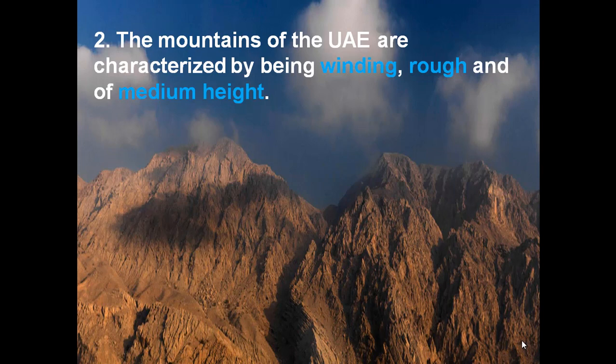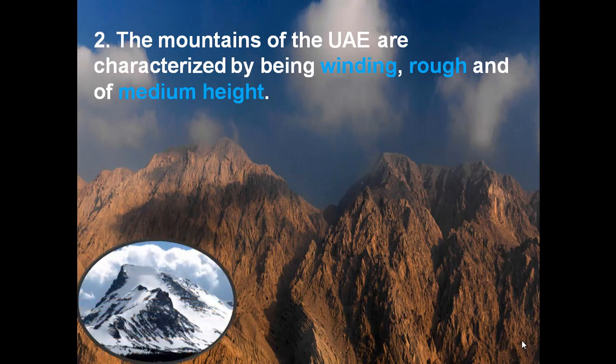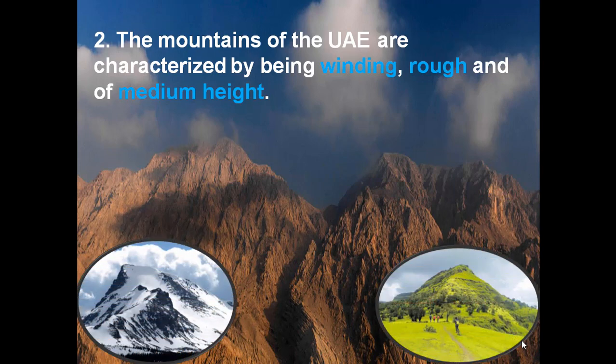If you travel to the northern part of the UAE — places like Ras Al Khaimah — this is the kind of mountain you see everywhere. If you look at this picture, or if you have been to any mountain area in India, you will understand that unlike those mountains in India, our UAE mountains are not snowy nor are they green, like we have in India. That makes the difference.